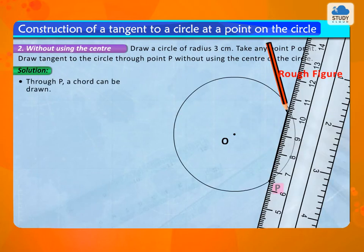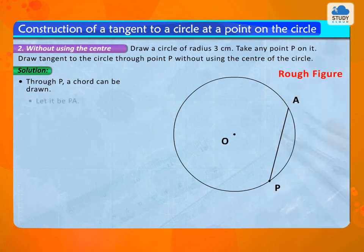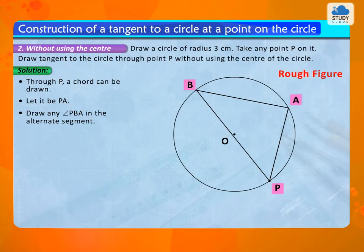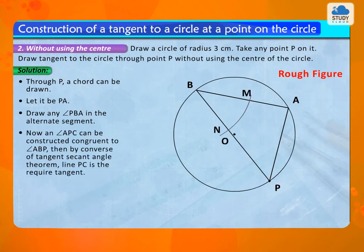Solution: Through P, a chord can be drawn. Let it be PA. Draw any angle PBA in the alternate segment. Now, an angle APC can be constructed congruent to angle ABP. Then, by converse of tangent secant angle theorem, line PC is the required tangent.